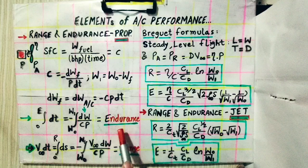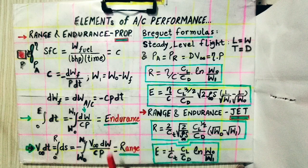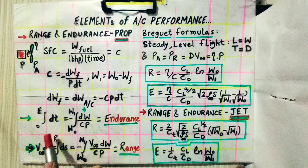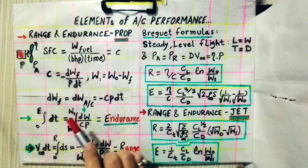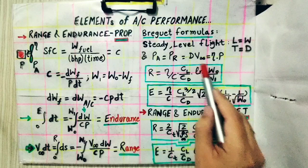Similarly, we derive the range formula by multiplying time by velocity, since distance equals speed times time. We multiply by V∞, the aircraft's flight velocity, so that V∞·dt = ds. Integrating from zero distance to range R, and from W₀ to W₁, gives the range integral. This is then solved using the Breguet formula.